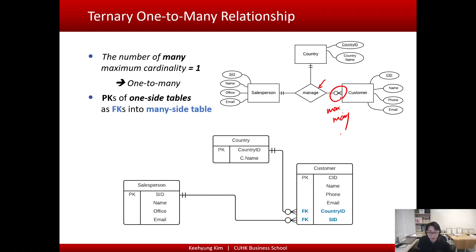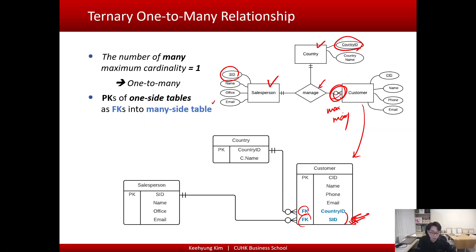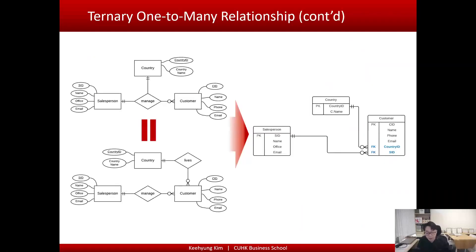In that case, we consider this a one-to-many tunnel relationship, and the rule is simple: put the primary key of the one-side table as a foreign key into the many-side table. The one-side table has primary key S_ID and Country_ID, so we put that into the many-side table — which is Customer — as a foreign key. That's the rule: for a totally one-to-many relationship, put the primary key of the one-side table into the many-side table as a foreign key.